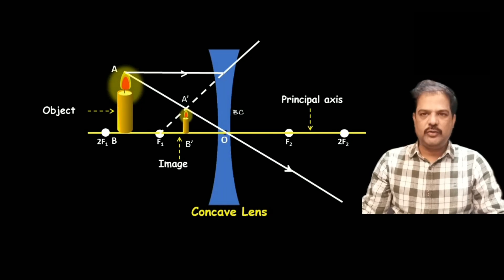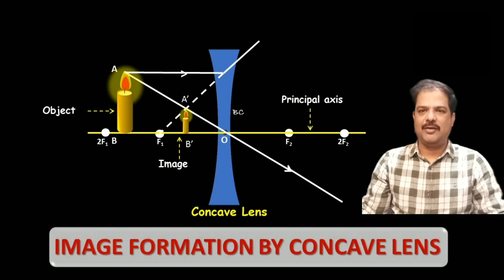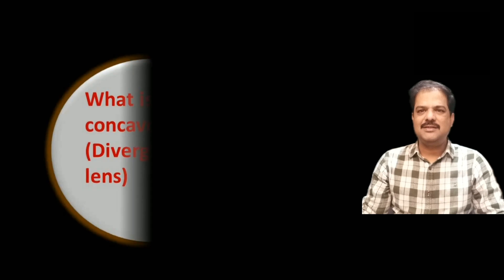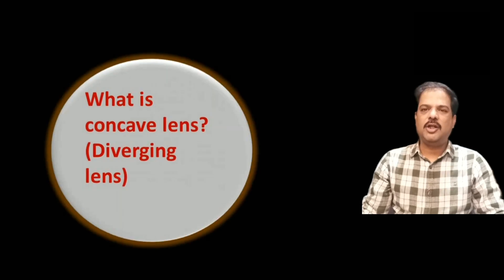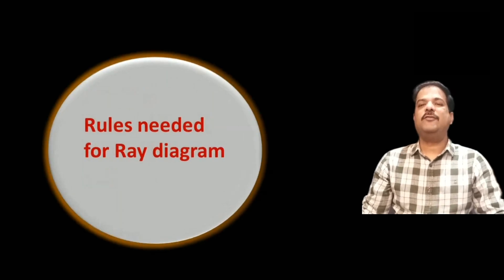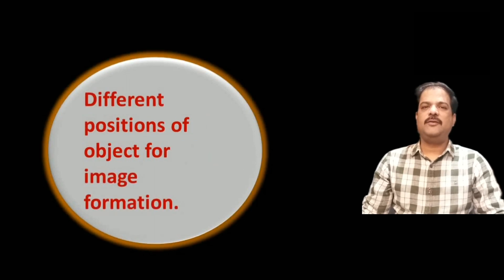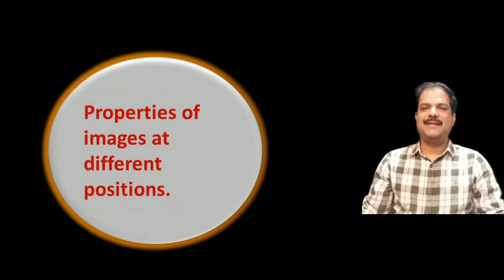Hello friends. Our today's topic is Image Formation by Concave Lens. In this topic, we are going to learn: What is Concave Lens? Why Concave Lens is known as Diverging Lens? Rules needed for the construction of Ray Diagram, Different Positions of Objects for Image Formation, and Properties of Images at Different Positions.